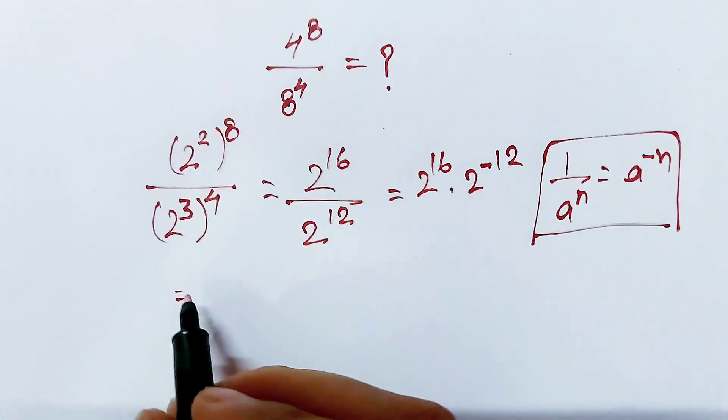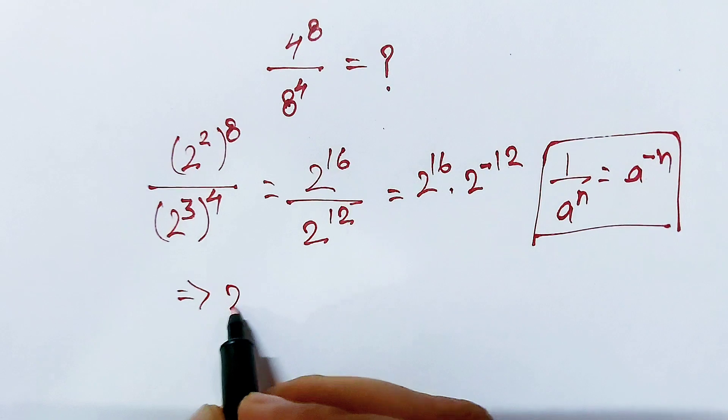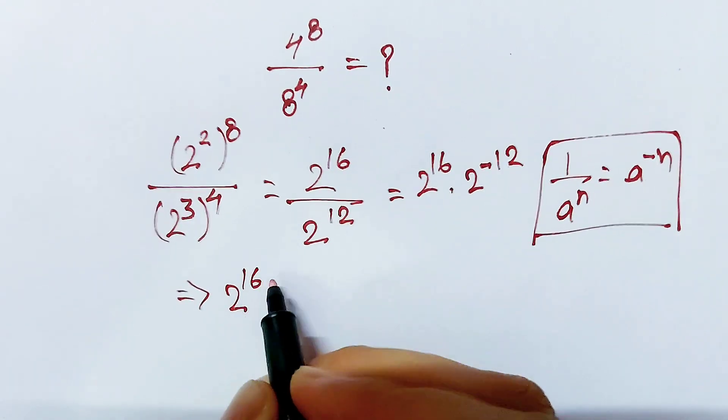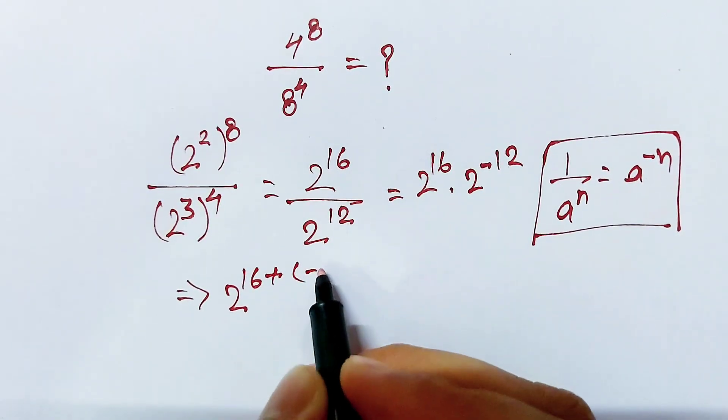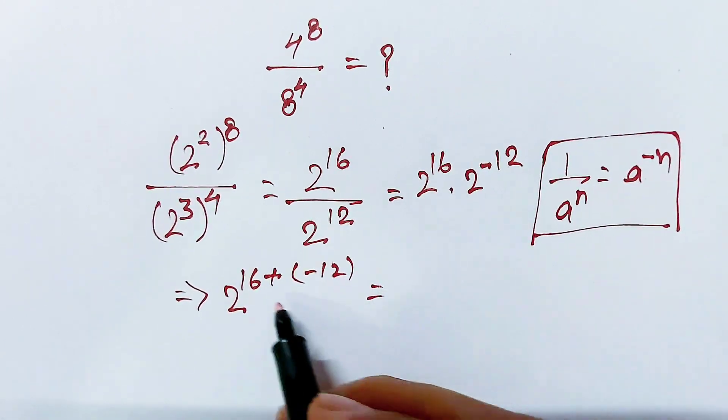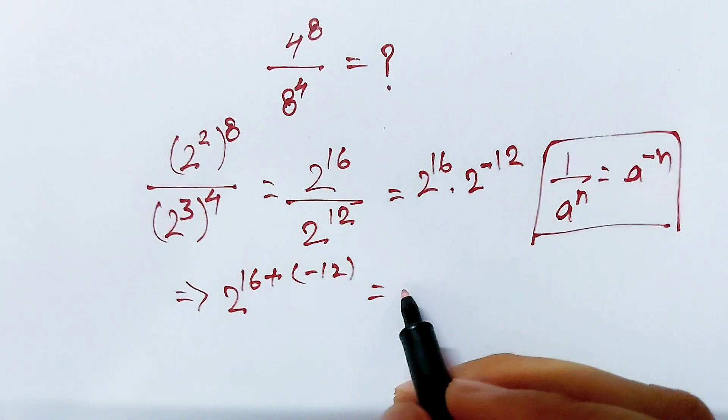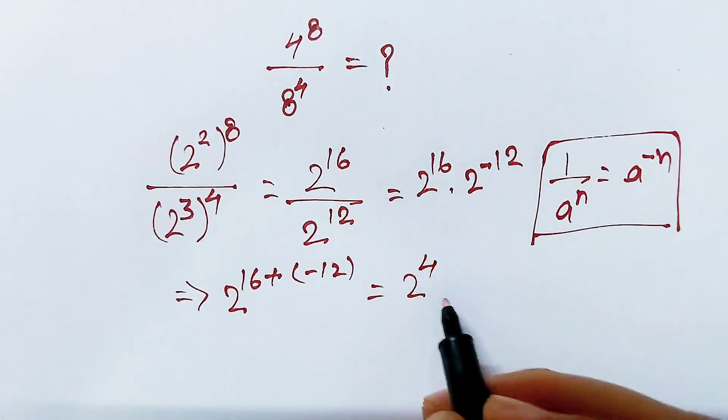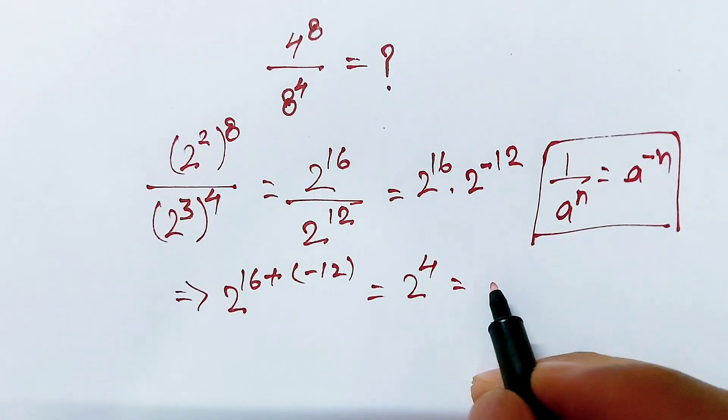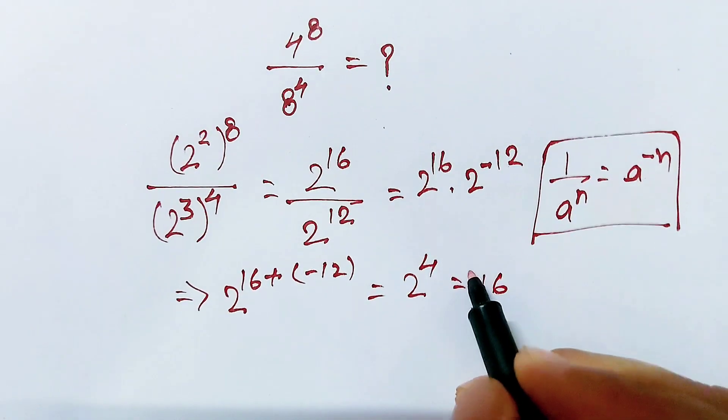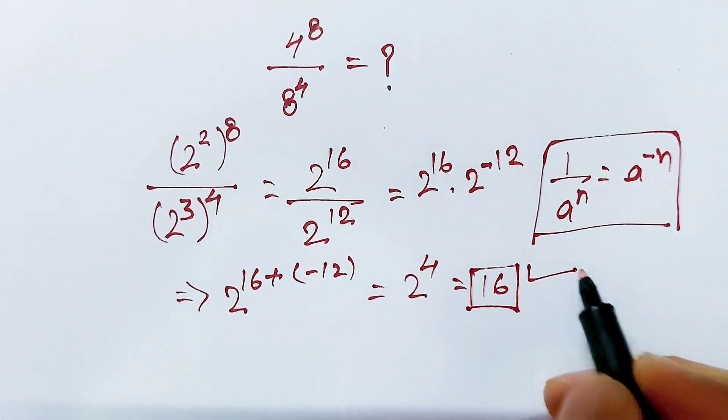Now here, bases are same, then powers will be added. So 2^16 plus negative 12, and 16 plus negative 12 equals 2^4, and 2^4 is equal to 16, and that's the final answer.